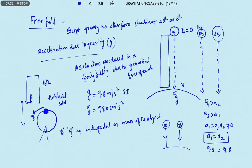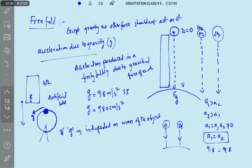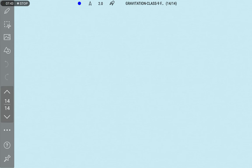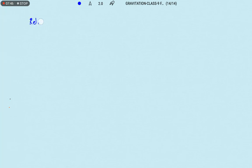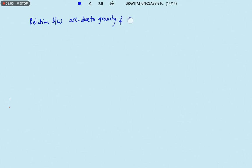These are the different cases where the bodies will be under freefall. Now let us discuss the relation between acceleration due to gravity and the gravitational constant. We are going to derive the relation between small g and capital G.